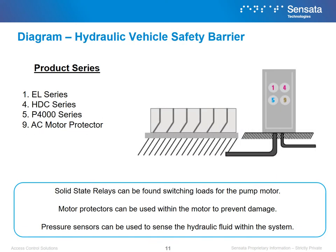Pictured here is an example of a hydraulic vehicle safety barrier and where our various solutions can be found within that system. Our solid state relays can be found switching the loads for the motor that powers the pump. Pressure sensors can be used to sense hydraulic fluid within the system. And lastly, a three-phase motor protector can be found in the motor to protect it against various failures.